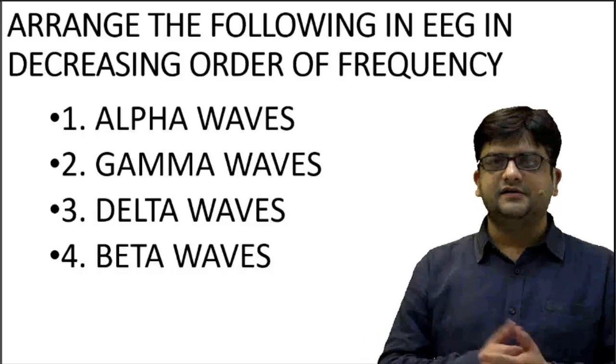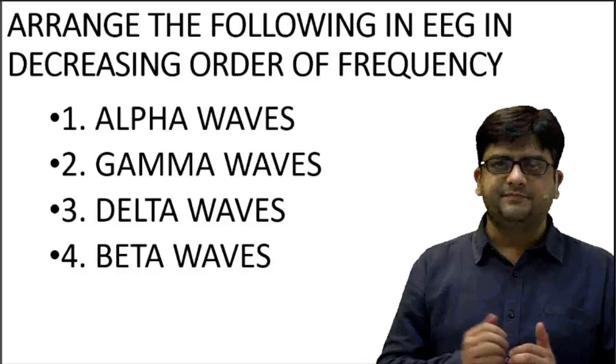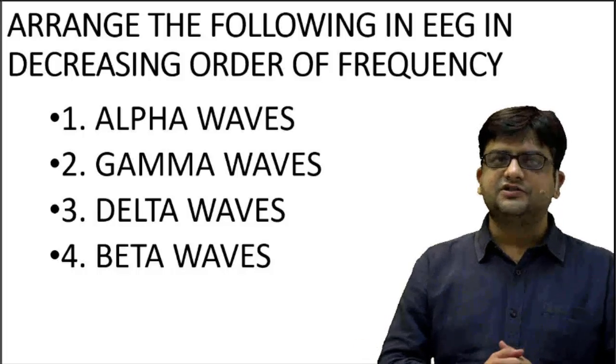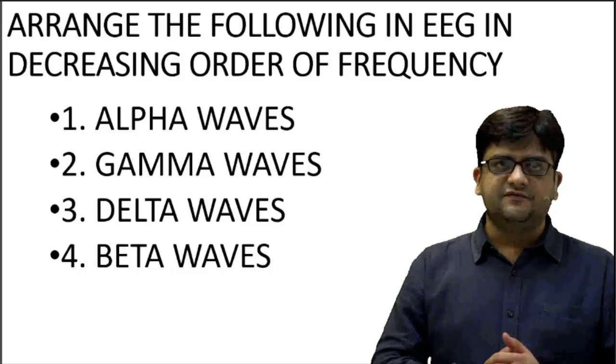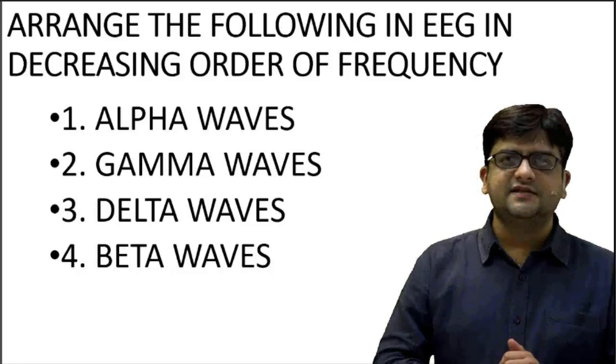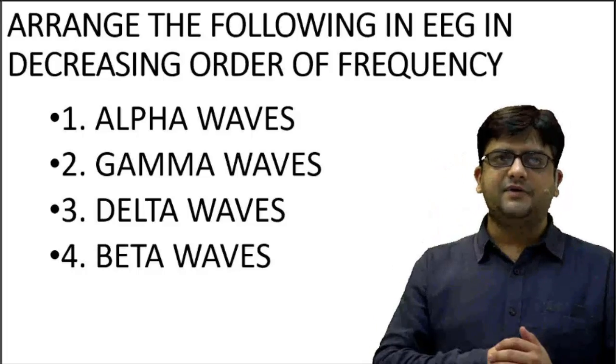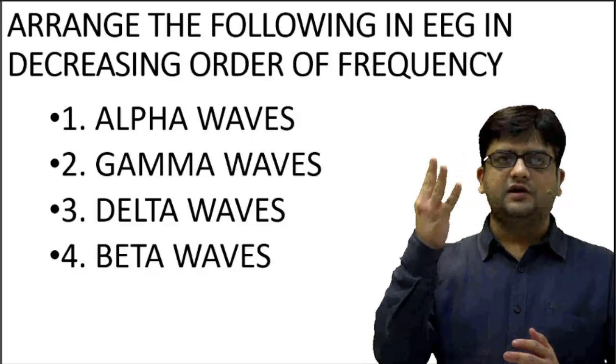We have to arrange in decreasing order of frequency. The first will be 2 gamma, second will be 4 beta, next will be 1 alpha.